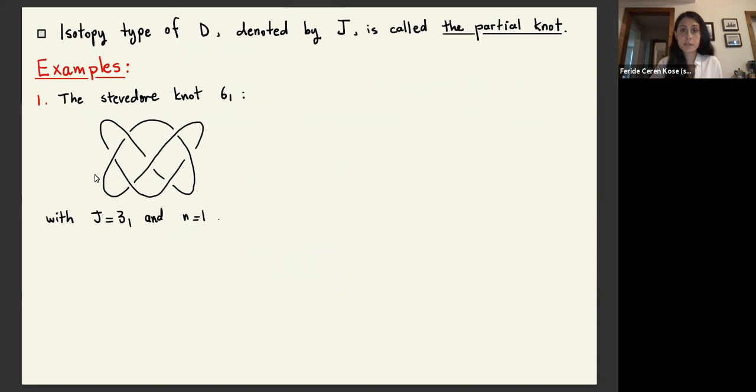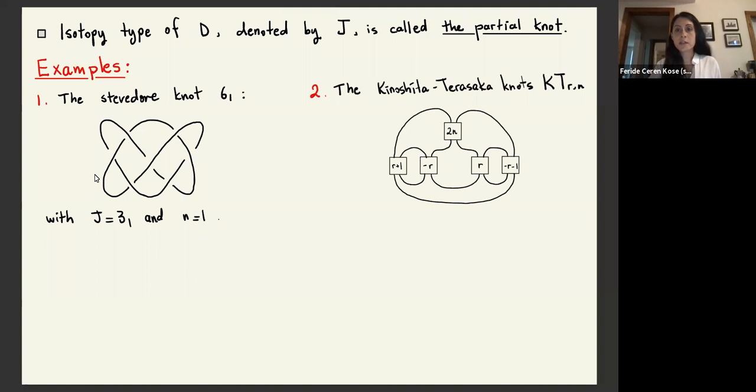Here are some examples of symmetric unions. For instance, the stevedore knot as a symmetric union of the trefoil. And all the knots in Kinoshita-Terasaka family are also symmetric unions. And you can easily work it out to see that the partial knots, in this case, is the unknot.